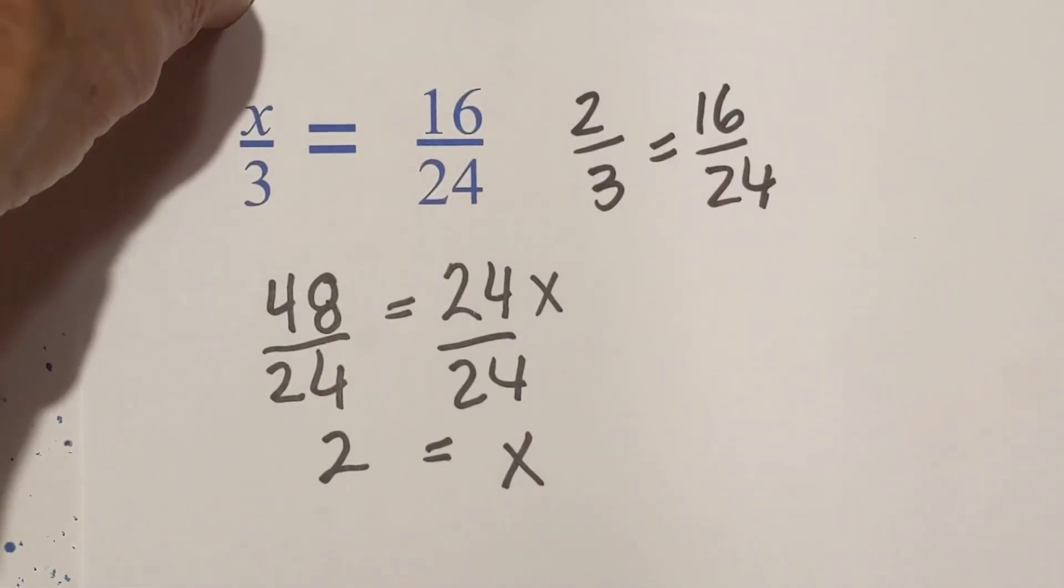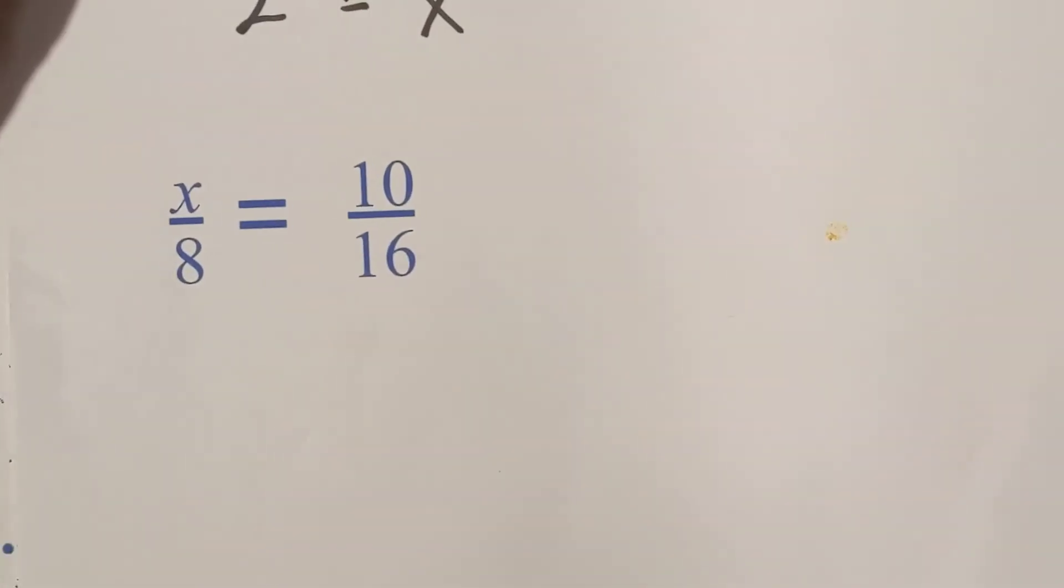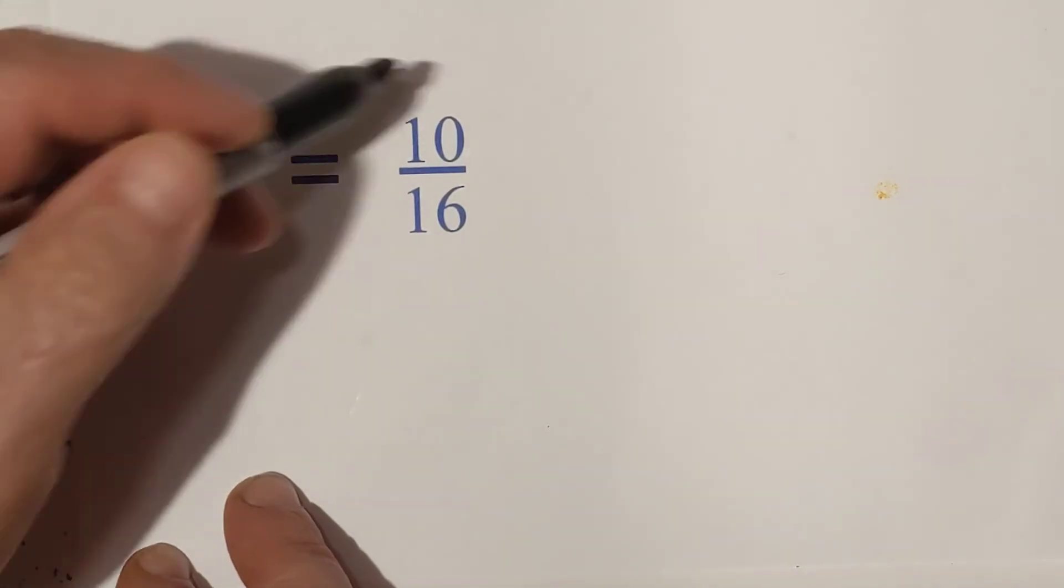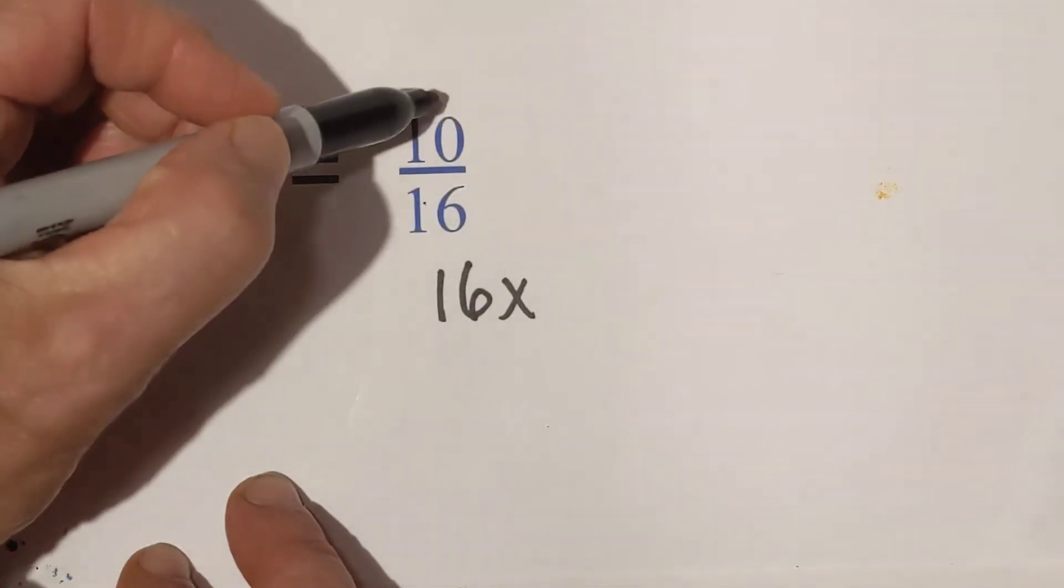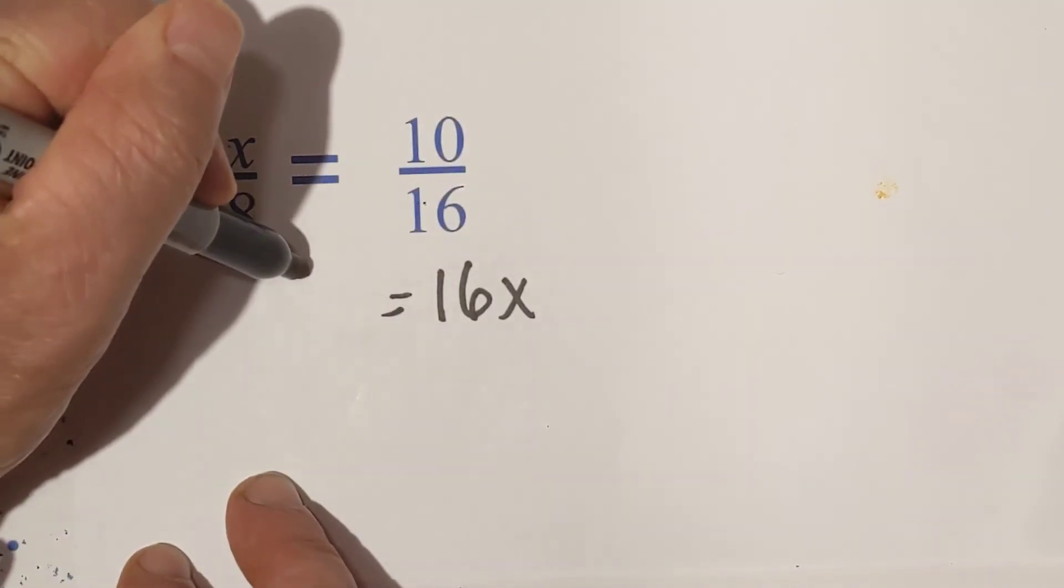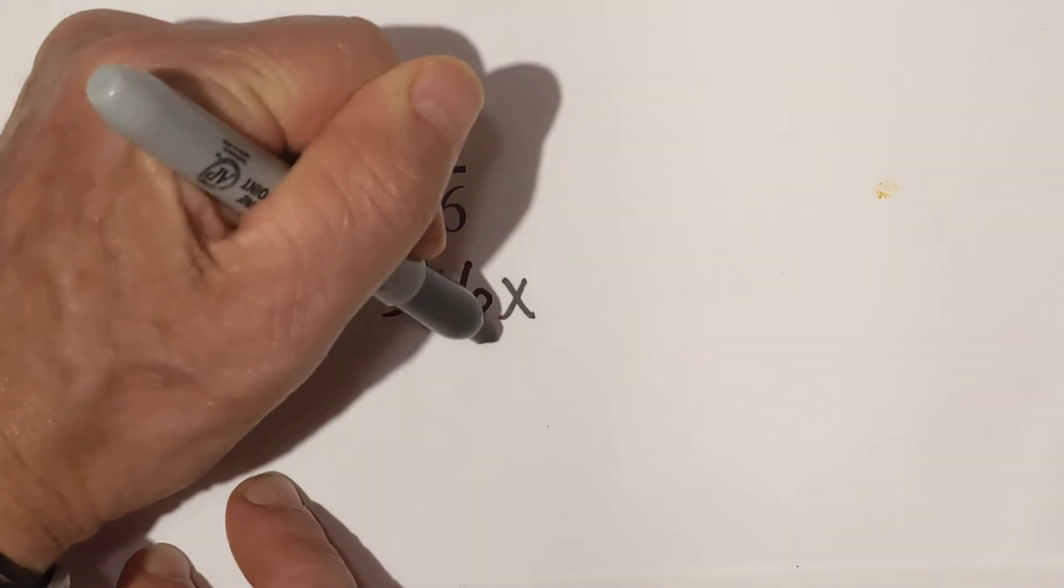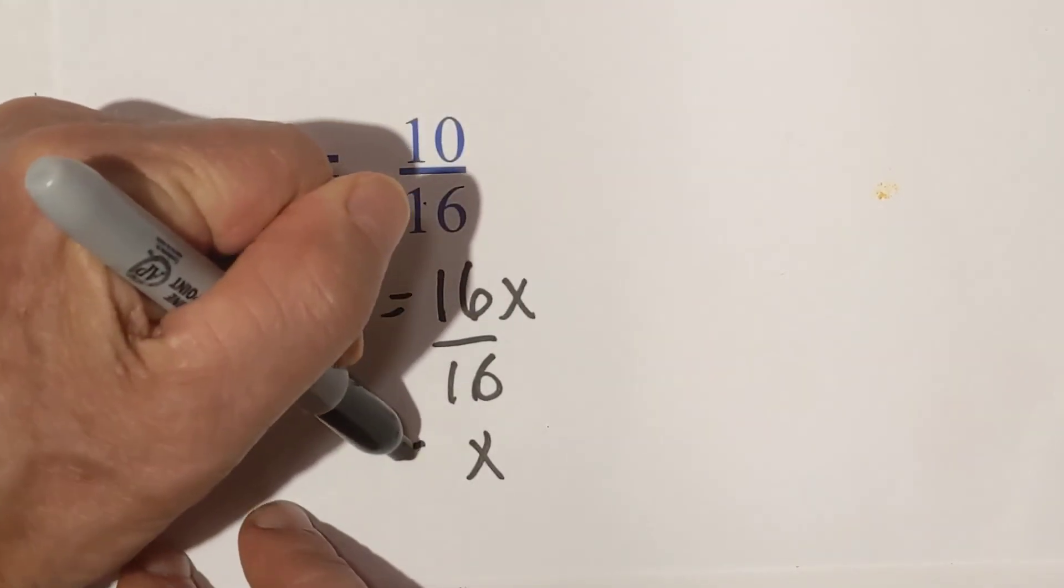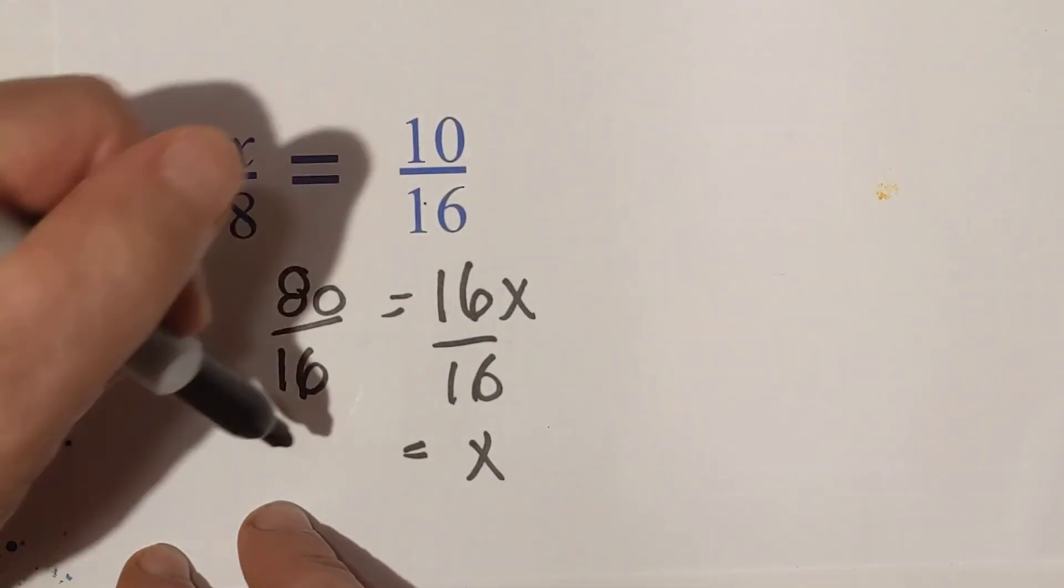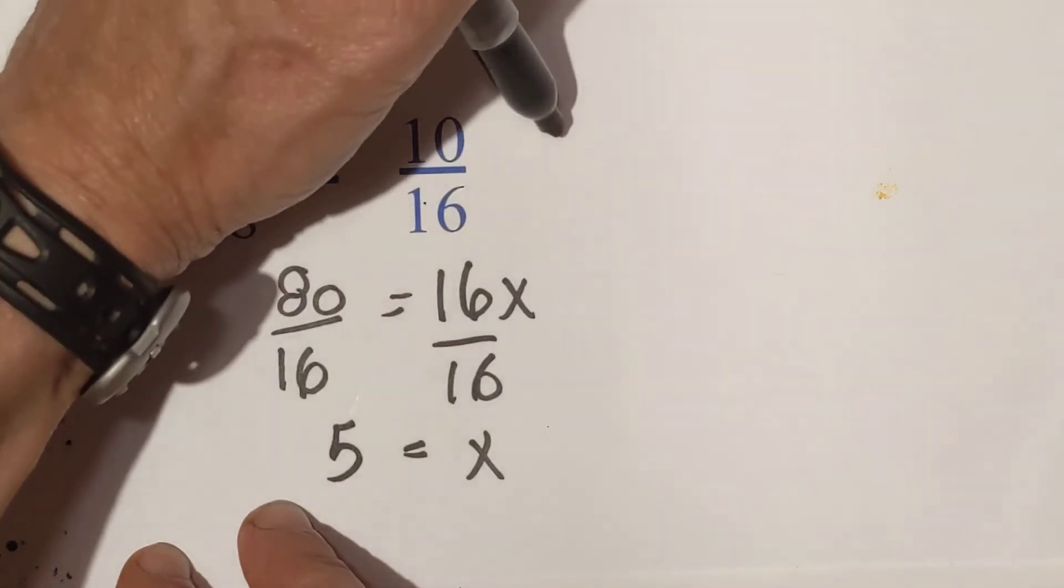And last but not least, let's work our last one just to make sure we know how to do this. We have 16x, because I went x times 16, 10 times 8 is 80. Divide by 16. Okay, x is equal to 80 divided by 16 is 5. Let's fill this in.